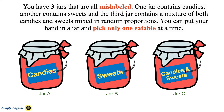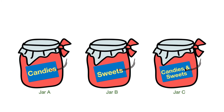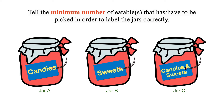You have three jars that are all mislabeled. One jar contains candies, another contains sweets, and the third jar contains a mixture of both candies and sweets mixed in random proportions. You can put your hand in a jar and pick only one eatable at a time. Tell the minimum number of eatables that have to be picked in order to label the jars correctly.